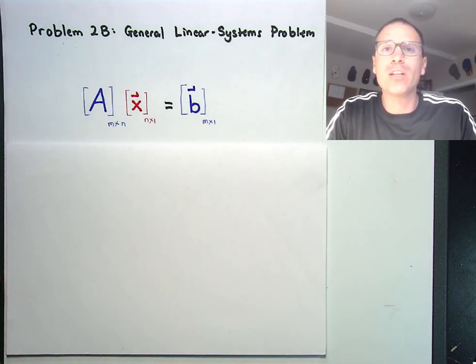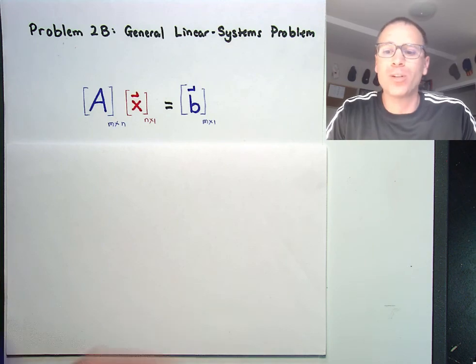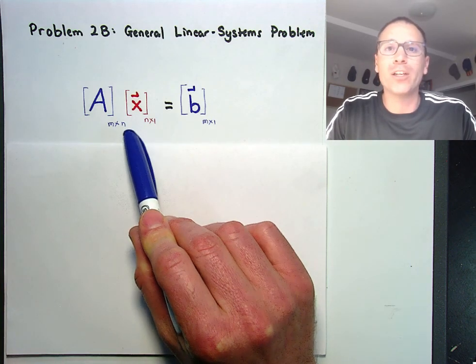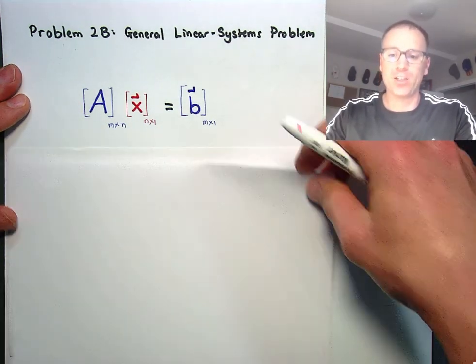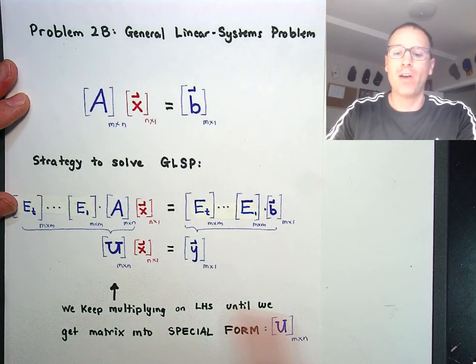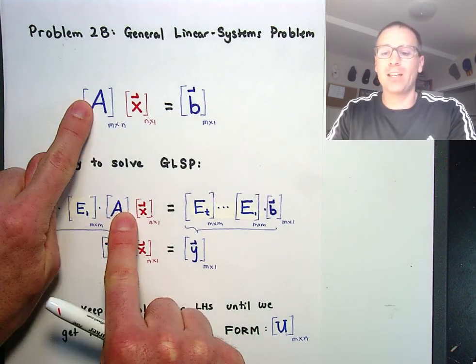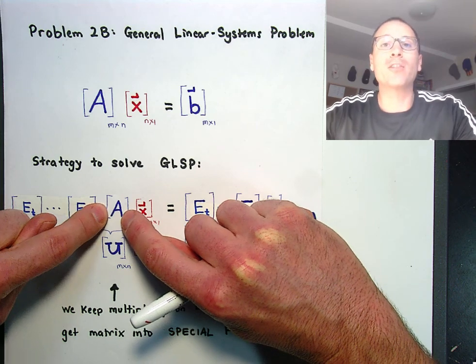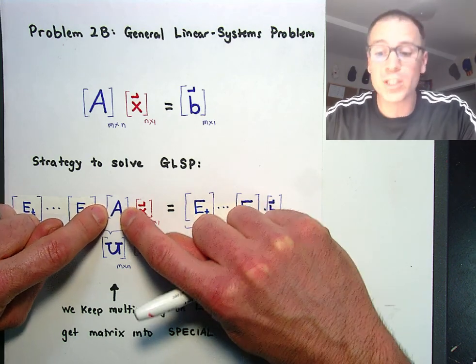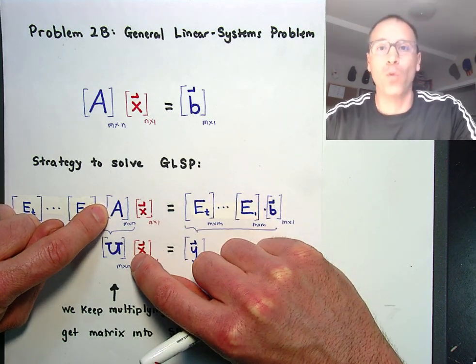Remember both of those technologies were designed to help us solve general linear systems problems. The way that we did this was apply a sequence of elementary matrices on the left hand side. Those matrices were designed to transform to reduce A into special form.